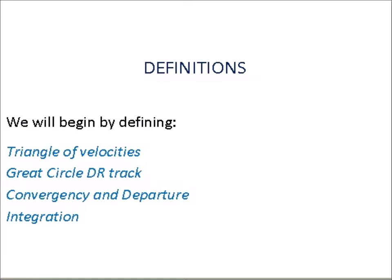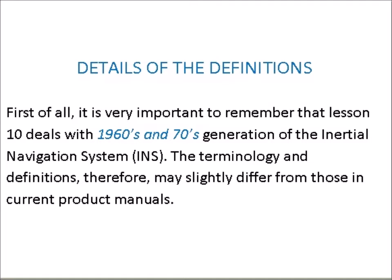We will begin by defining the Triangle of Velocities, Great Circle DR Track, Convergence and Departure, and Integration. It is very important to remember that lesson 10 deals with the 1960s and 70s generation of the inertial navigation system (INS). The terminology and definitions may slightly differ from those in current product manuals.